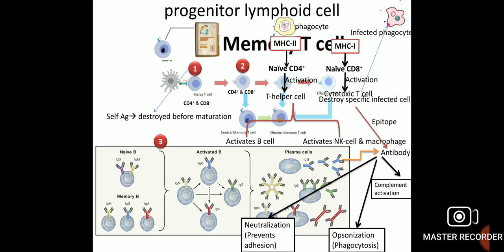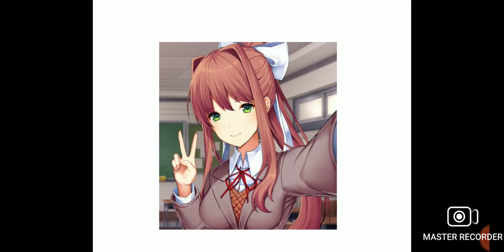T cells also activate B cells and natural killer cells, along with macrophages, all ultimately involved in eliminating foreign antigens. Antibodies function by activating complement, causing opsonization (phagocytosis), neutralizing pathogens, or preventing adhesion to surfaces. This is how all these immune processes work together — interconnected in a way that is difficult to understand individually, but here summarized in a single connected explanation.